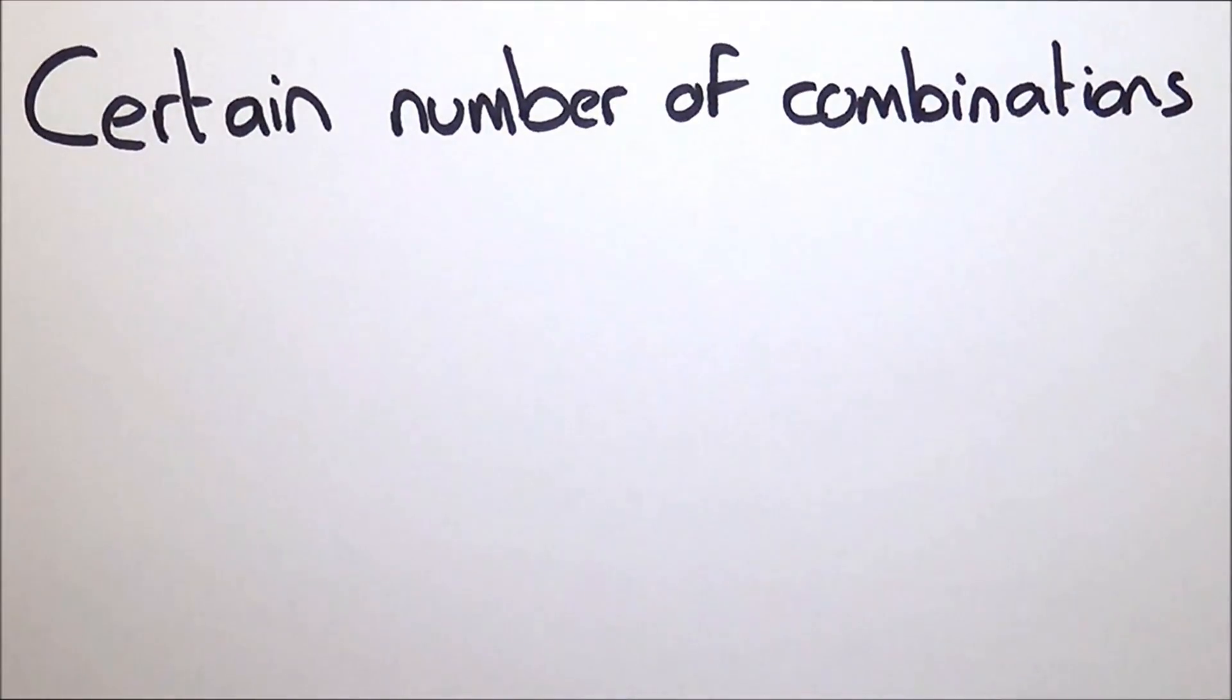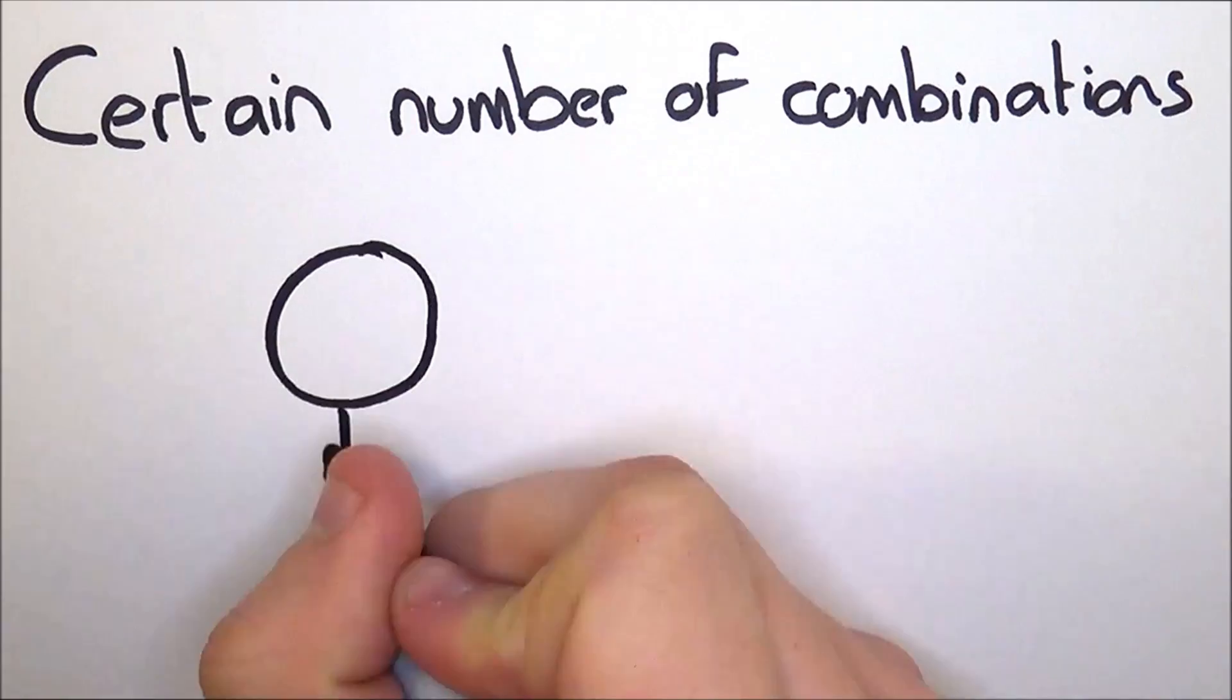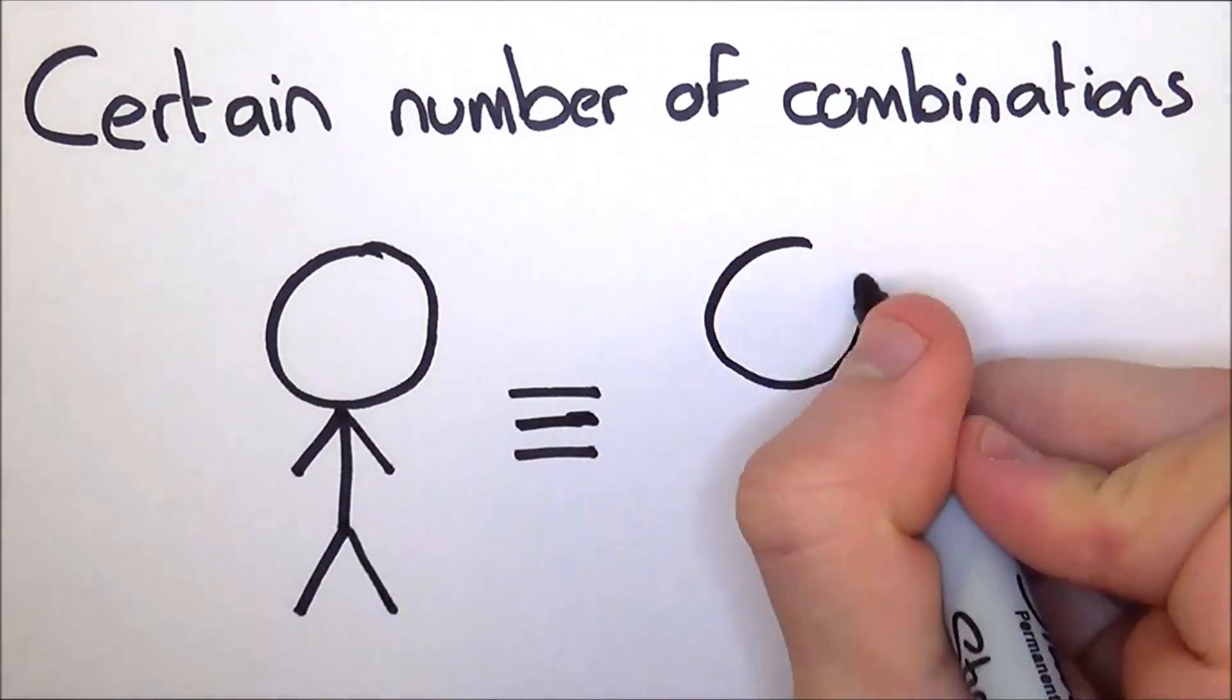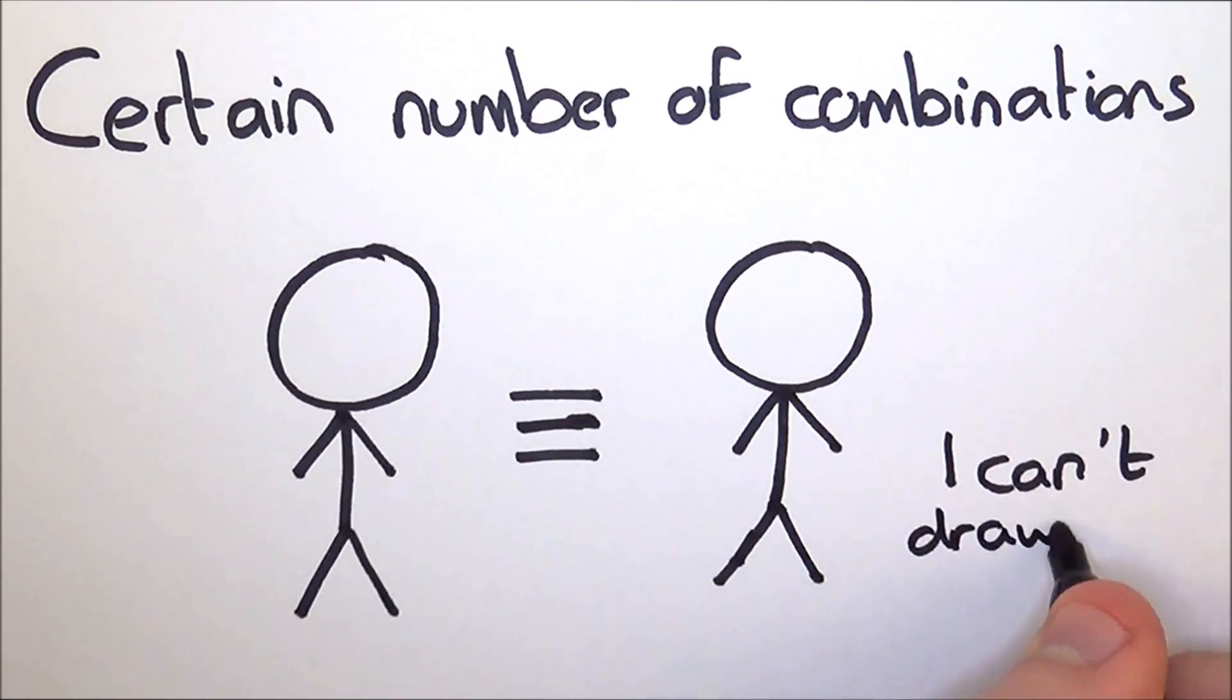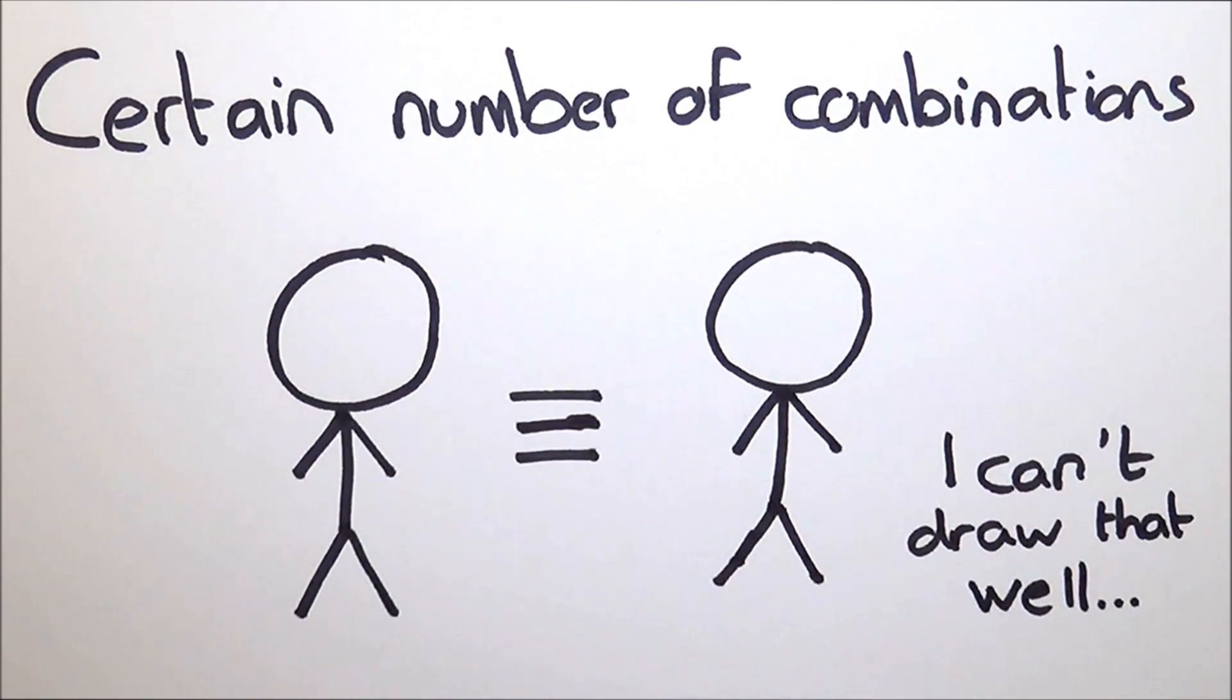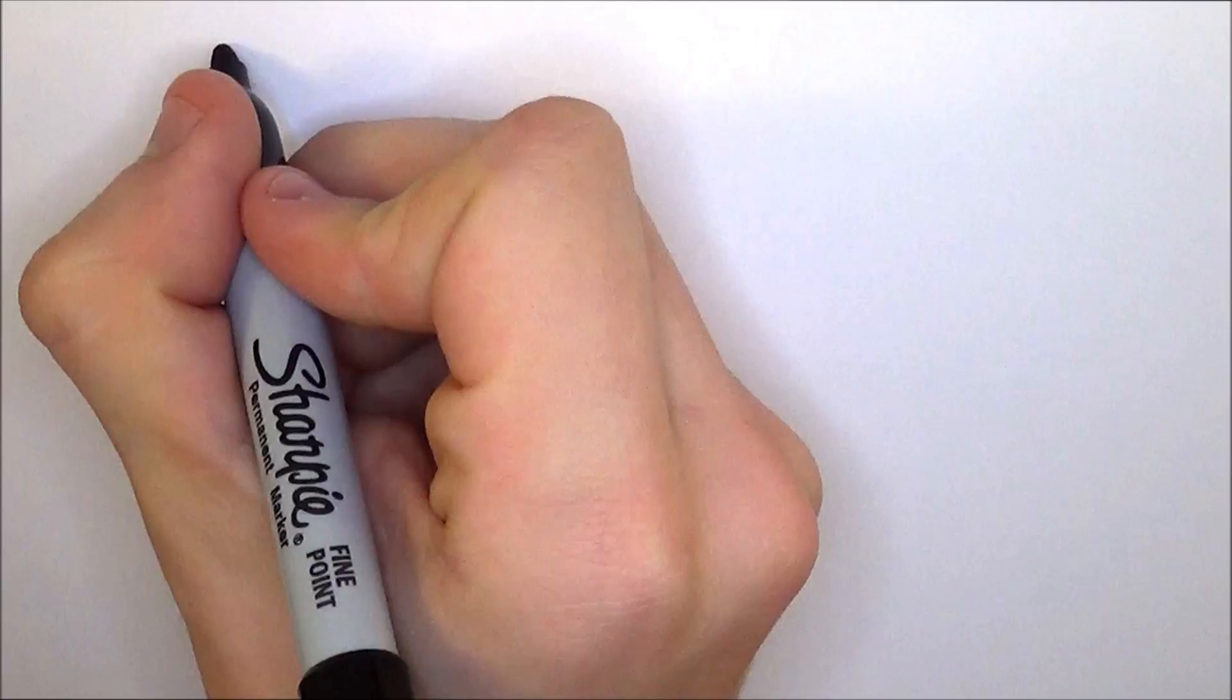And while we are not there yet, but eventually the universe will get so big that it's going to run out of combinations, then there could be an exact copy of you, atom for atom. Not even twins are that identical. I mean, that is crazy.